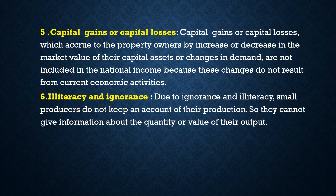Number 6: illiteracy and ignorance. Especially in developing countries, due to ignorance and illiteracy, small producers do not keep accounts of their production. So they cannot give information about the quantity or value of their output, making it difficult to measure the national income.